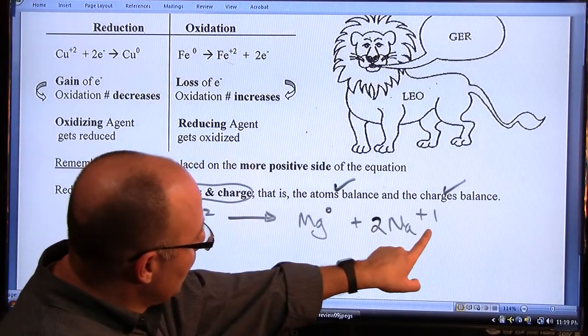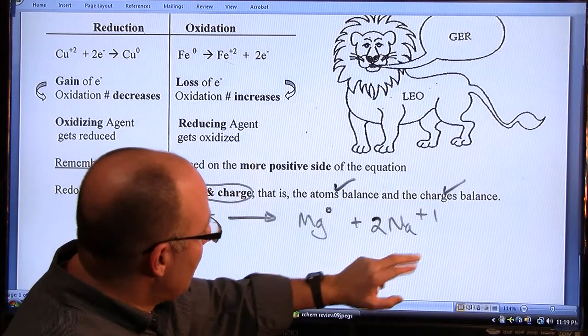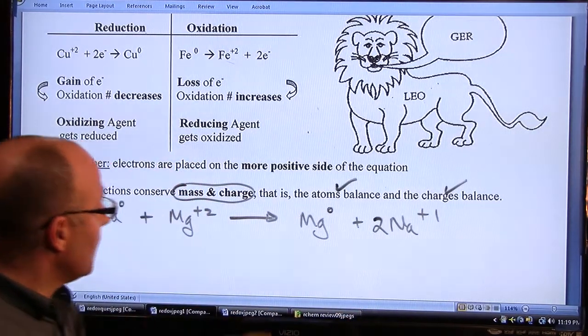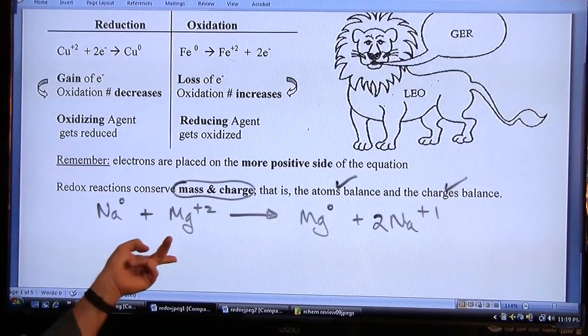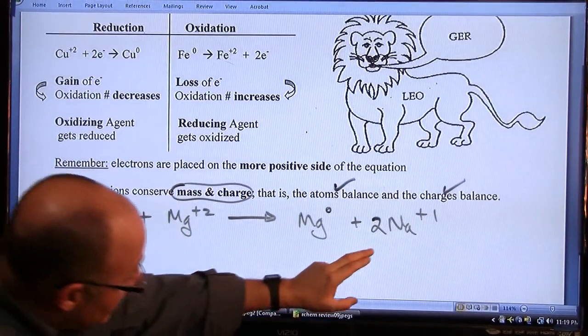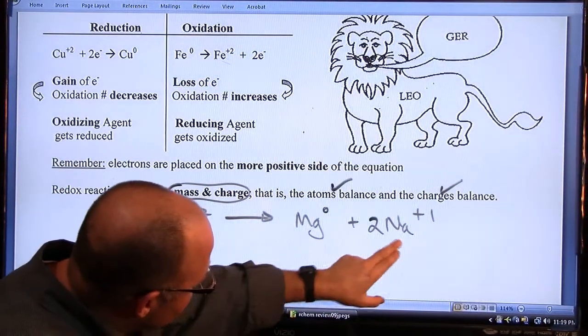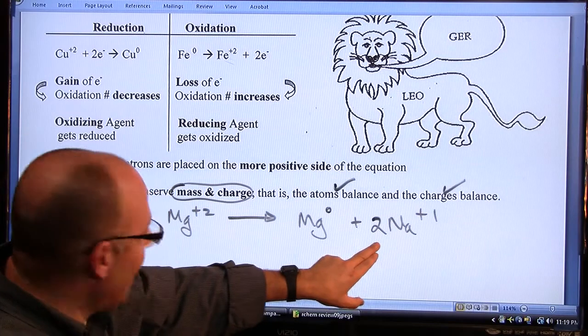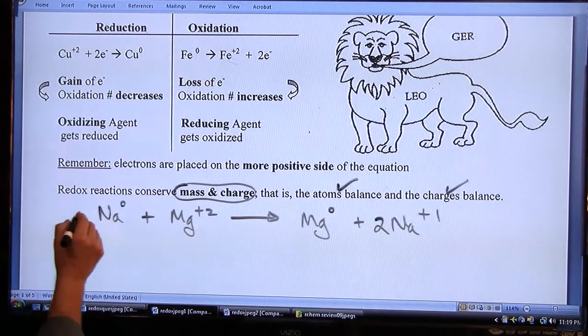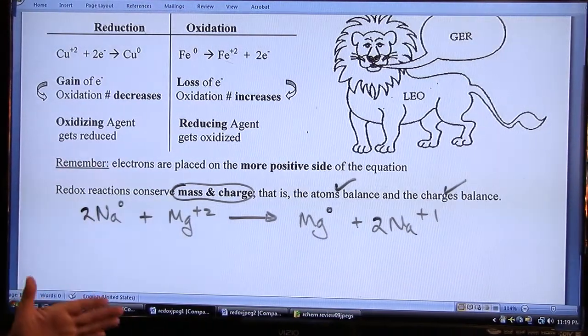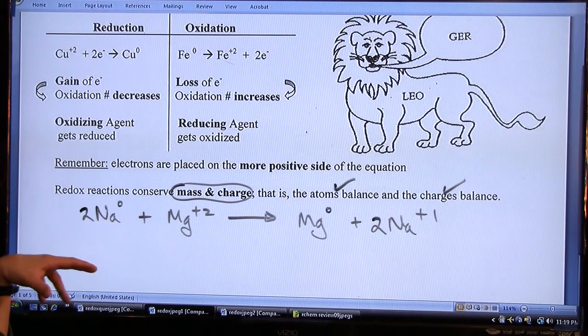So we'd have 2 times plus 1 giving you a positive 2 charge on the right, which counters the positive 2 charge on the left. But the instant you do that, 2 Na's, you've changed the number of sodium atoms. So you have to put 2 here. So now the atoms balance and the charges balance.